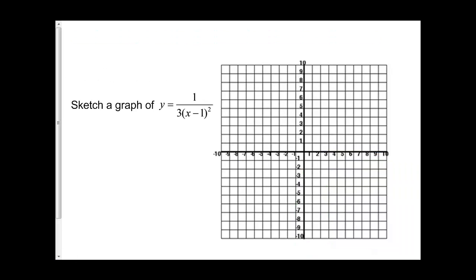It gets a bit more like the linear case when we do have an x-intercept. If I graph my original function, I'm going to start at positive 1. It has an a value of 3, so I'm going to go over 1, up 3. I'd normally go over 2, up 12, but that won't fit on the graph. This represents my original function.